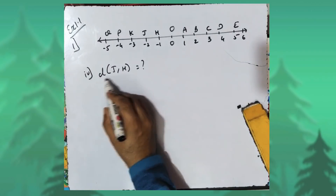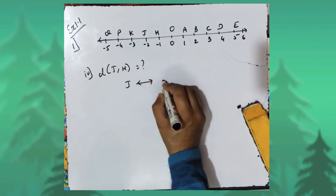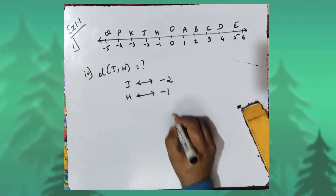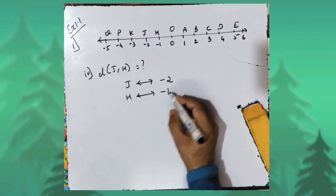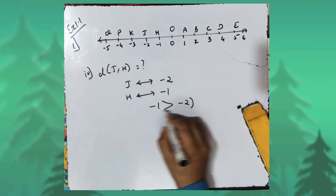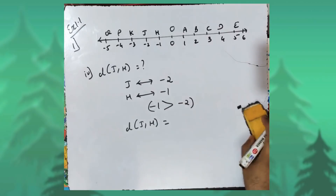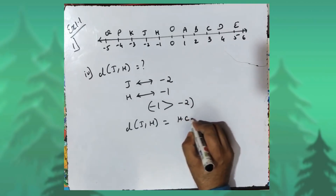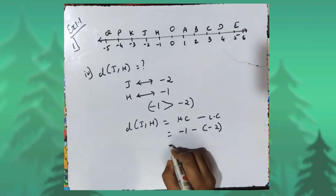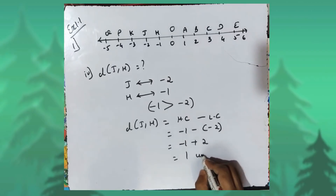In the fourth sum, distance JH is to be found. The coordinate of J is minus two and the coordinate of H is minus one. Minus one is greater than minus two, so distance JH is found by: higher coordinate minus lower coordinate, which is minus one minus minus two, equals minus one plus two, which equals one unit.